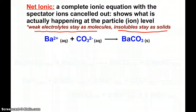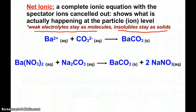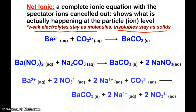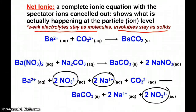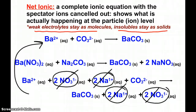If you have a molecular compound or a weak electrolyte, they stay together as molecules. Essentially, what this net ionic equation says is: any source of barium ions and any source of carbonate ions, when mixed together, will always produce the same net ionic equation. For example, barium nitrate and sodium carbonate reacting — the molecular equation gives barium carbonate and sodium nitrate. Looking at the complete ionic equation, nitrate ions are on both sides and sodium ions are on both sides — spectators — and we end up with the same net ionic equation. These net ionic equations will be very useful throughout AP Chem.